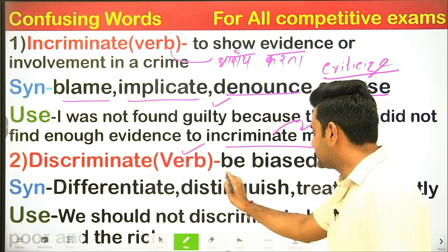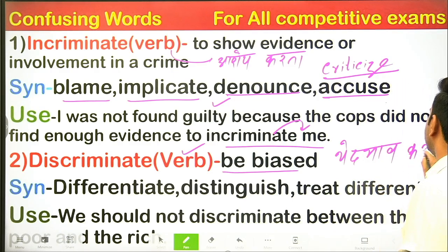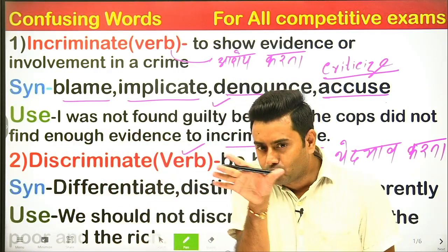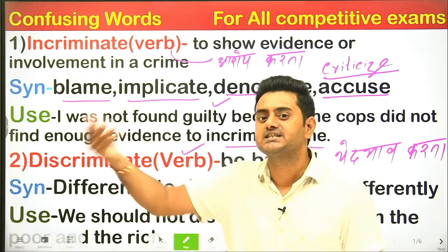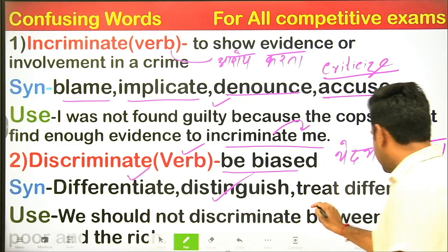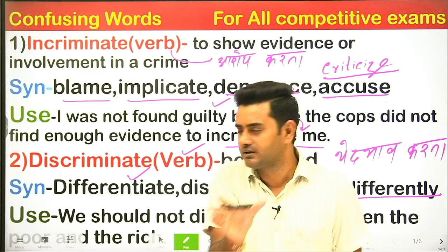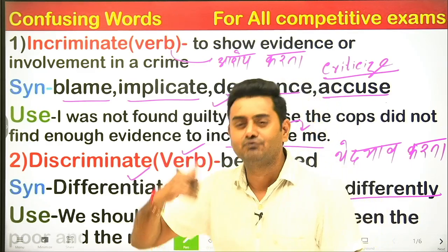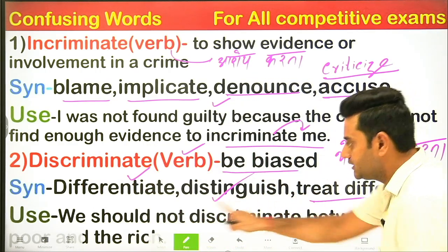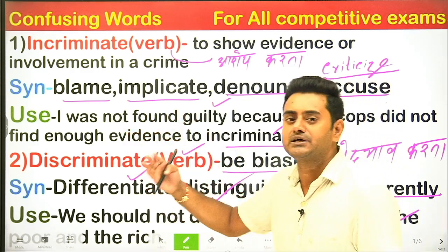The second word is 'discriminate'. Discriminate means to show bias — when you treat people differently and do not look at everyone with equal eyes. To be biased, to not treat everyone equally. Synonyms include: differentiate, distinguish, treat differently. Example: 'We would not discriminate between the poor and the rich.' Meaning: We should not show bias between poor and rich.